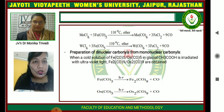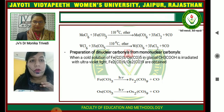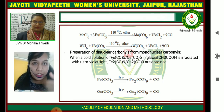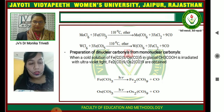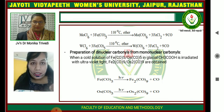Next is the preparation of dinuclear carbonyls from mononuclear carbonyl. Mononuclear carbonyl in the presence of photons — in a photochemical reaction or in the presence of ultraviolet light — undergoes reaction. You can see Fe(CO)5 in the presence of ultraviolet light gives a dinuclear iron carbonyl.